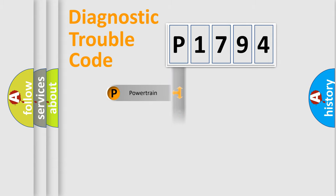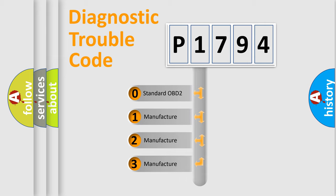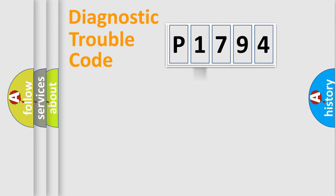Powertrain, body, chassis, network. This distribution is defined in the first character code. If the second character is expressed as zero, it is a standardized error. In the case of numbers 1, 2, 3, it is a car-specific error.